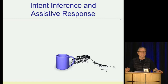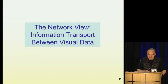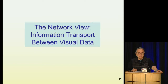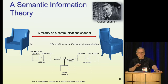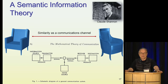Part of my work has been on building networks that transport information between visual data. The idea is that if you have similar objects, this notion of similarity can act as a communication channel that transports information and knowledge from one object to the other. The goal is to transport interaction information from one object to the other. Like in classical information theory, the channel is not perfect — the objects are not the same, not everything can be transferred. It takes some understanding to know how to transfer things and what can and cannot be transferred.